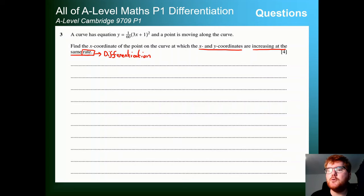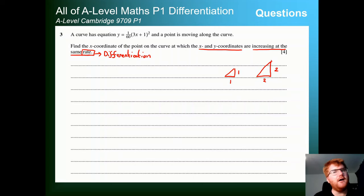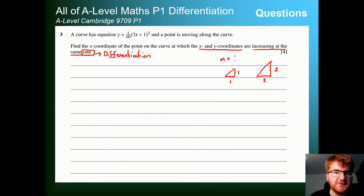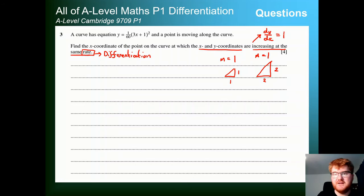We're looking for the x and y-coordinates to increase at the same rate — so if x goes along by 1, y goes up by 1. If we go x by 2, we go y by 2. Essentially we're looking for when the y change and the x change are the same. Going back to IGCSE: 1 divided by 1 is 1, 2 divided by 2 is 1. So the question wants dy/dx at this coordinate to equal 1.